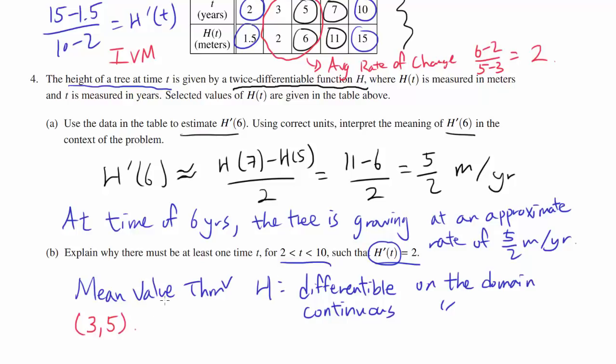So we can just apply Mean Value Theorem to the interval from 3 to 5. So we know there has to be a value in 3 to 5 such that H'(t) is 2, and of course 3 to 5 is contained within 2 to 10. So we have shown that there is a value in 2 to 10 such that H'(t) is 2.